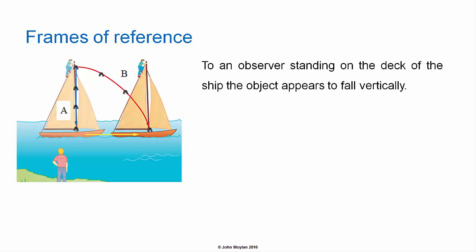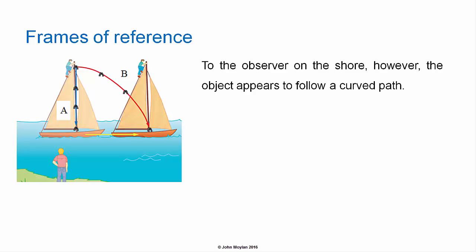To an observer standing on the deck of the ship, the object appears to fall vertically. To an observer standing on the shore, however, the object will appear to follow a curved path. In fact, a parabolic path made up of a constant vertical acceleration and a constant horizontal velocity.